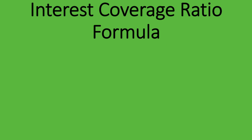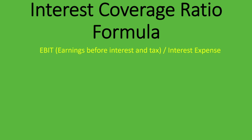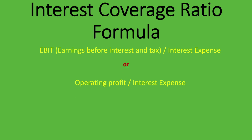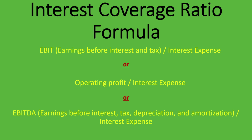The formula for the interest coverage ratio is EBIT — earnings before interest and tax — divided by interest expense, also known as finance cost. That's not the only way to calculate it: others use operating profit divided by interest expense, or EBITDA (earnings before interest, tax, depreciation and amortization) divided by interest expense. The denominator always stays the same — interest expense — but the most common approach uses EBIT.